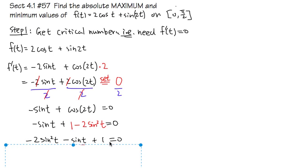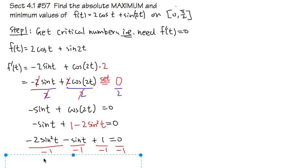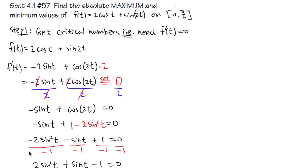To solve this quadratic equation in terms of sin(t), we don't want a negative leading coefficient, so we divide everything by -1. This gives us the much cleaner equation: 2sin²(t) + sin(t) - 1 = 0.